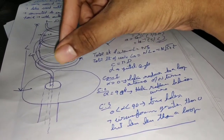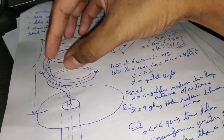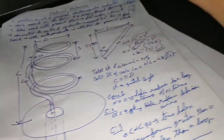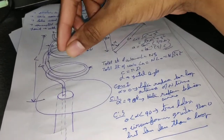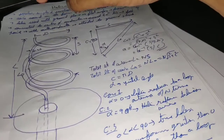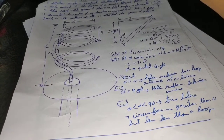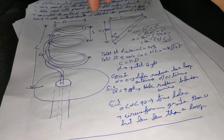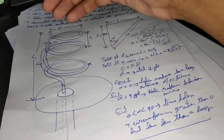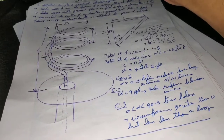Case two: α = 90°. When α = 90°, the helix reduces to a straight linear wire. Case three: when α lies between 0° and 90°, we get a true helix. In this case, the circumference is greater than zero but less than a complete loop — you get something in between a flat loop and a straight wire.